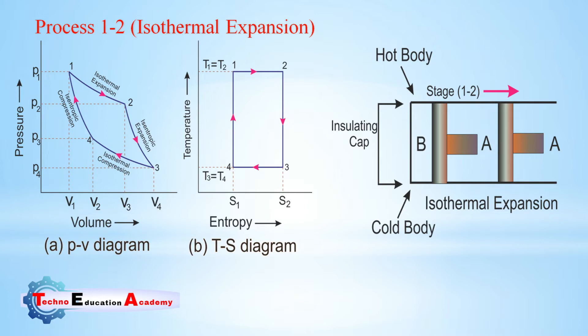Now we will discuss the various processes on the PV diagram one by one. The fluid used to operate the Carnot cycle — the cylinder head is alternately a perfect conductor or perfect insulator of heat. Heat is caused to flow into the cylinder by applying a high-temperature energy source to the cylinder head during expansion, and to flow out by applying a lower-temperature energy source during compression.